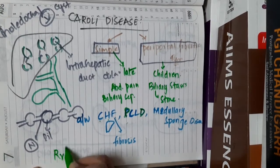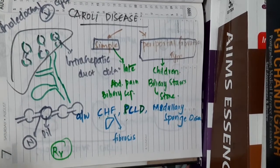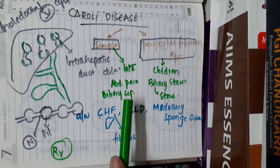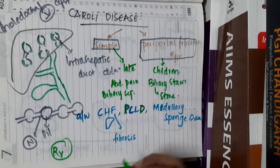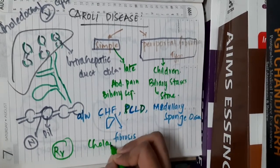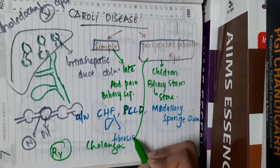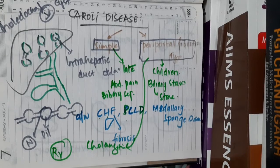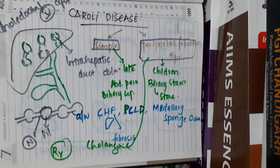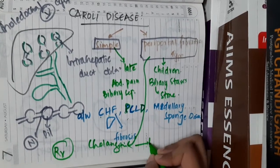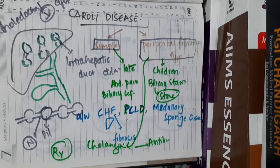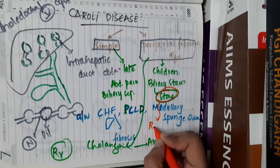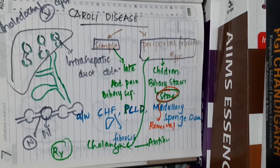For the treatment of Caroli's disease, if there is any infection like biliary sepsis, you will have to give antibiotics. Caroli's disease also predisposes to cholangitis, especially the periportal fibrotic type; in this situation we also give antibiotics. If there are any stones, these stones should be removed — we will have to plan for removal of the stones.